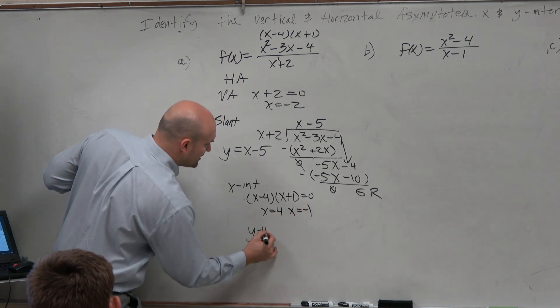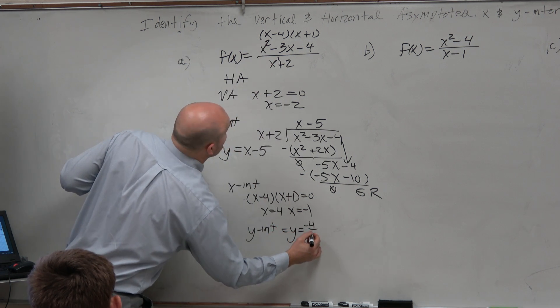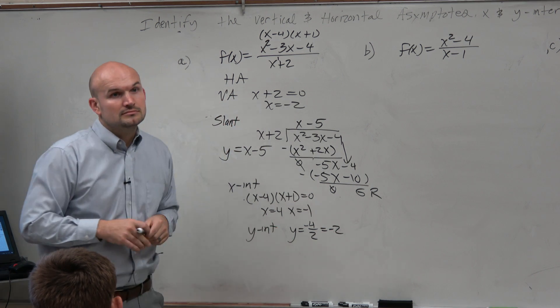And then the y-intercept, again, the same thing we've been doing, guys. That's y equals negative 4 over positive 2, which is negative 2.